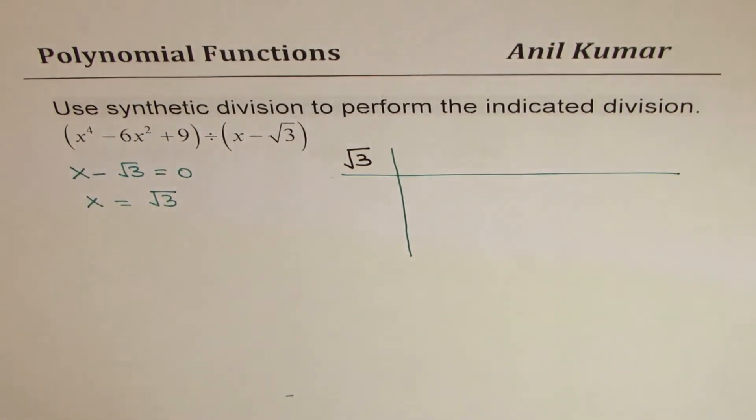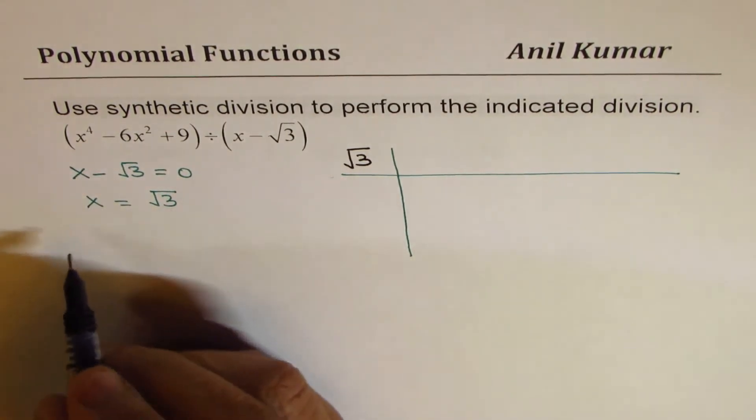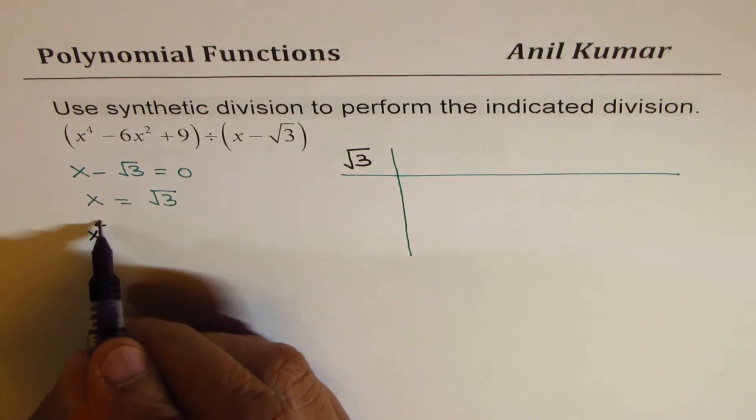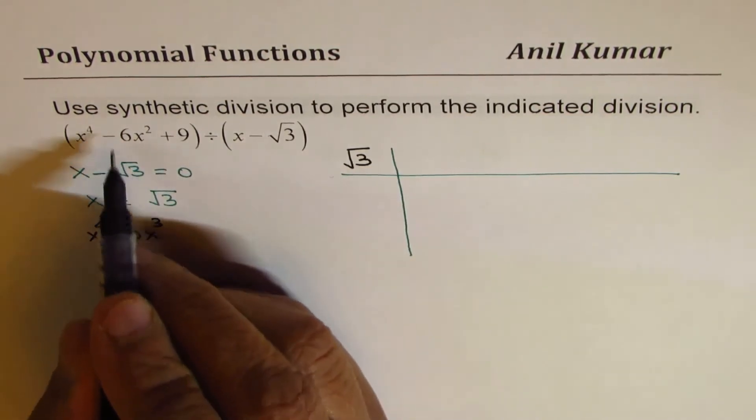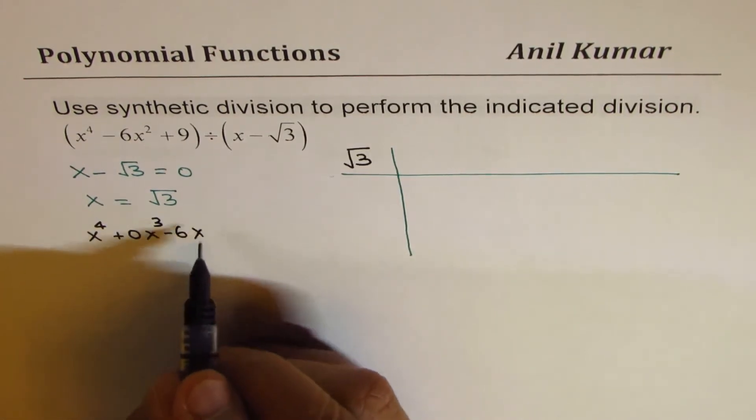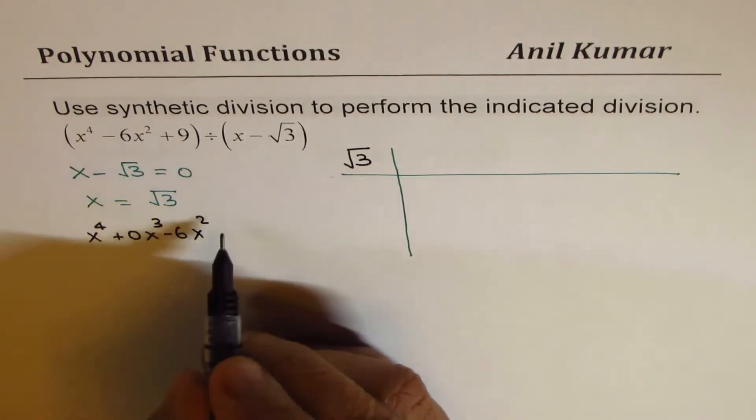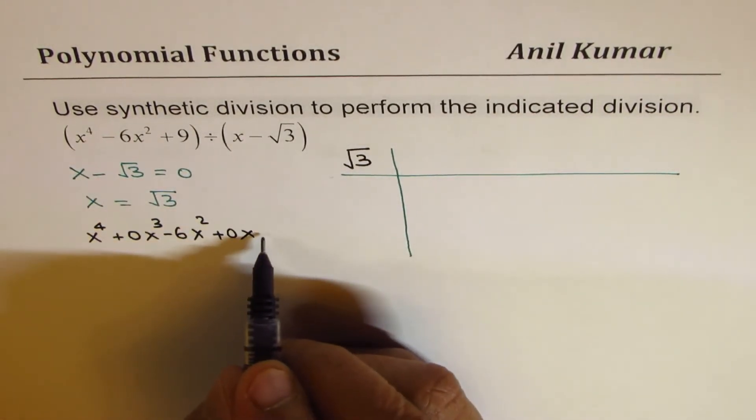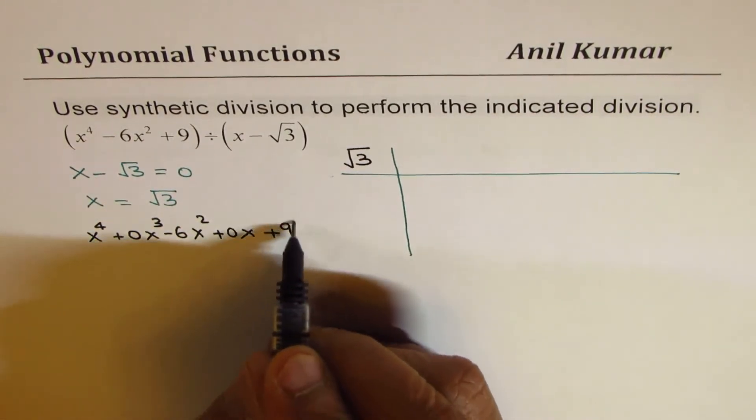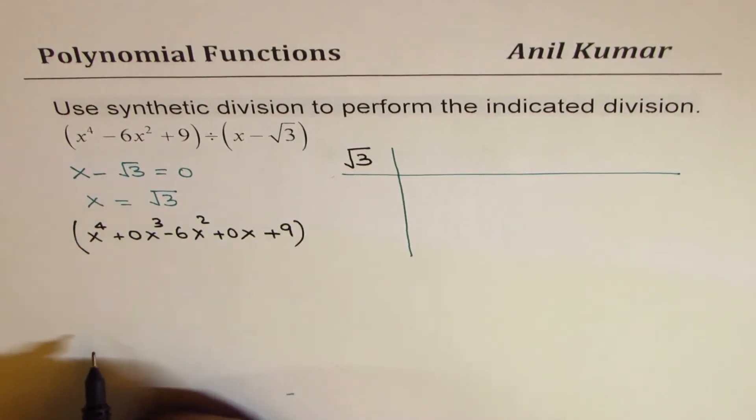Let me rewrite this term with zeros as placeholders. So I could write this as x to the power of 4 plus 0x cube, minus 6x squared. And we don't have the x term, so I will write 0 for that. We do have a constant which is 9. So that is the function we are looking for.